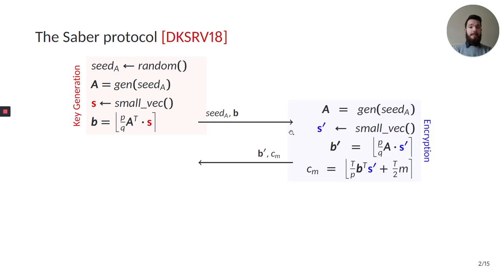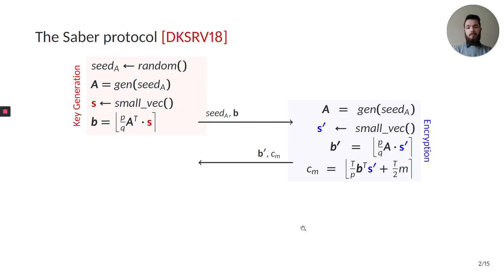During encryption, the other party recomputes the matrix A and generates their own secret S', in a similar fashion to S. Indeed, S' is also a vector consisting of polynomials with small coefficients. Then they compute the vector B', similar to what happened during key generation, by multiplying the matrix A times the secret S', rescaling it and rounding it. Lastly, they compute the product between B in the public key and their secret S', and use this value to embed the message M. The ciphertext then consists of the vector B' and the polynomial C_M.